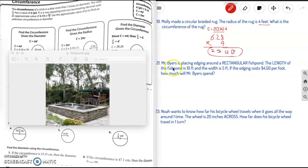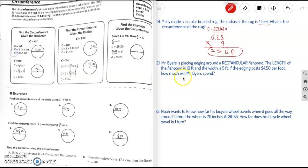21. Mr. Byers is placing edging around a rectangular fish pond. The length of the fish pond is 10 feet and the width is 5 feet. If the edging costs $4.50 per foot, how much will Mr. Byers spend? Okay, two-step problem. So, are we looking for a perimeter or circumference here? Perimeter, very good. Perimeter of a rectangle.